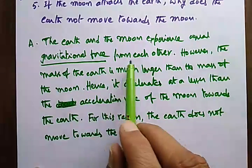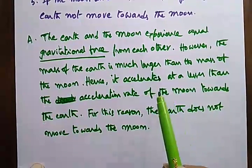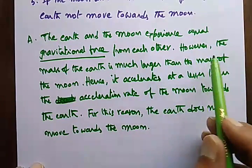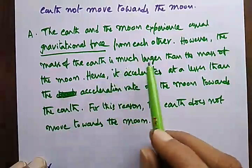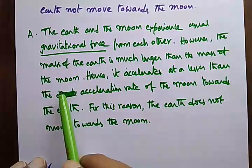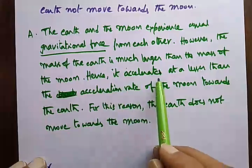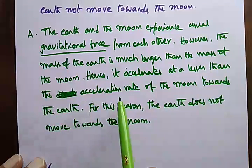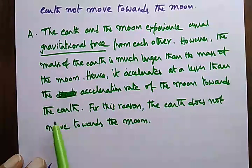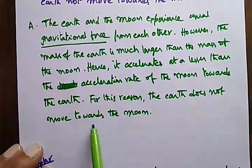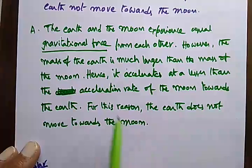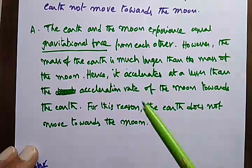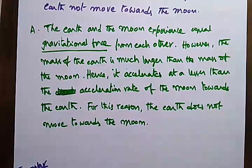Let me read the full answer: the earth and the moon experience equal gravitational forces from each other. However, the mass of the earth is much larger than the mass of the moon. Hence it accelerates at a lesser rate than the acceleration of the moon towards the earth. For this reason, the earth does not move towards the moon. This is an important question — it's going to come for two marks.